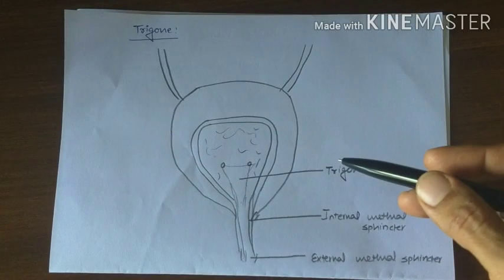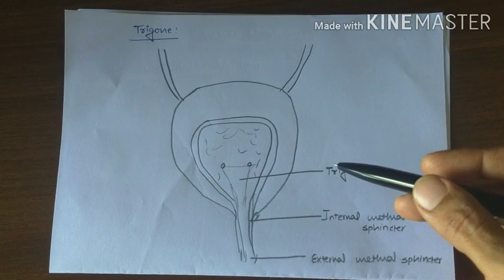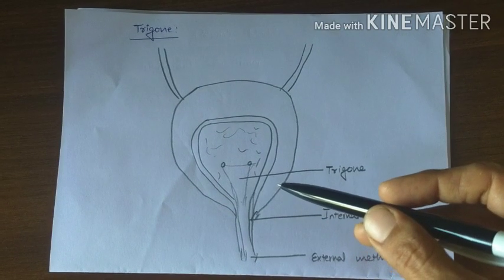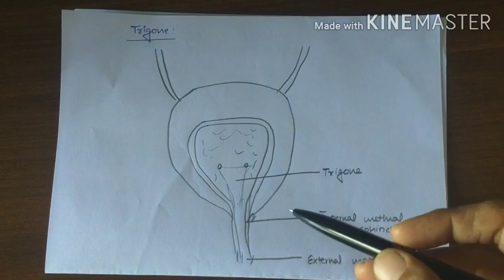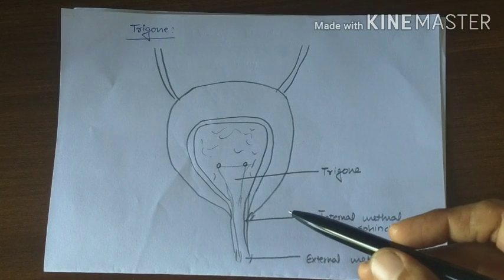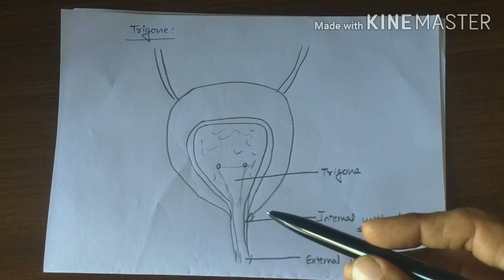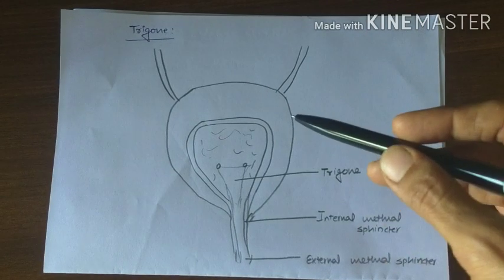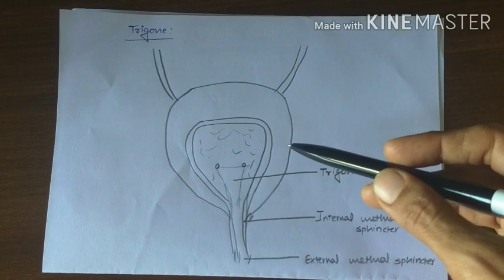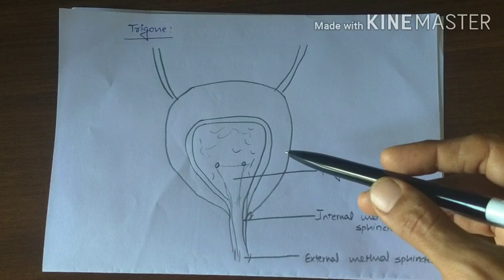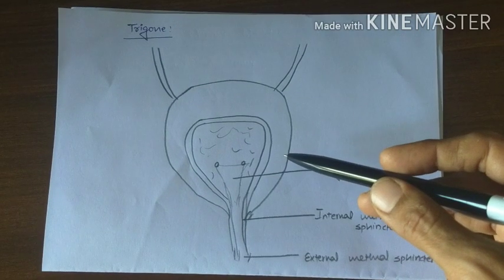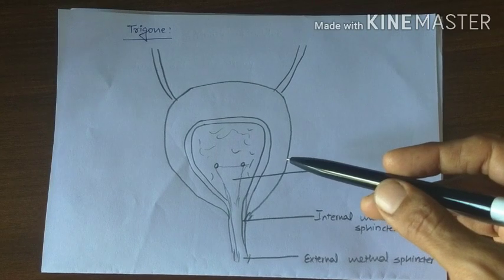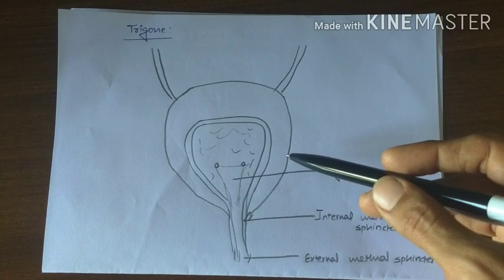On the posterior wall of the bladder, lying immediately above the bladder neck, there is a small triangular area known as the trigone. At the lowermost part of the trigone there is an opening of the bladder neck into the posterior urethra, and at the uppermost angles of the trigone two ureters enter the bladder. The mucosa of the trigone is smooth, in contrast to the remaining bladder mucosa which has folding.